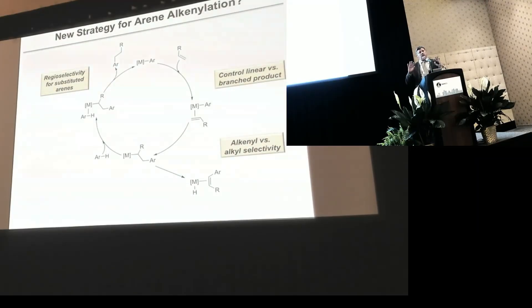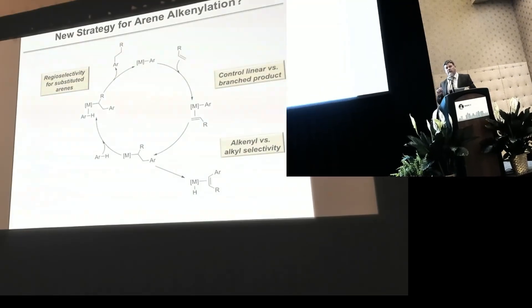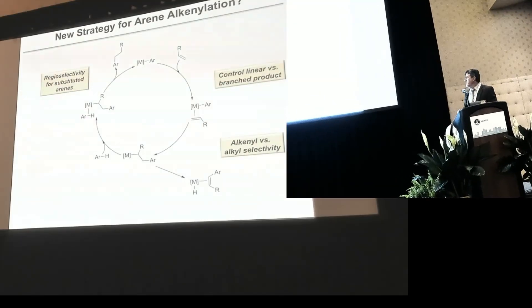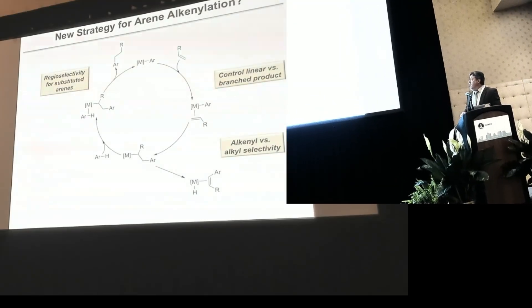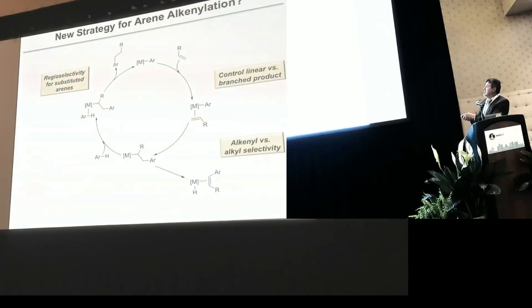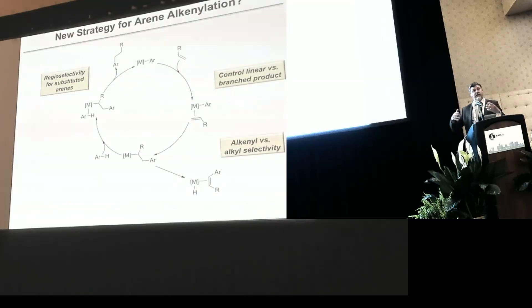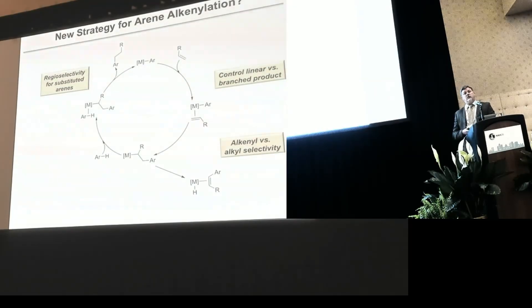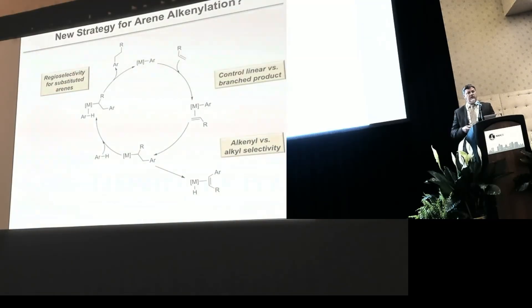So we've got that potential for tunability in our late-metal catalyst. And then finally, in the C–H activation step — whether it occurs directly or from some intermediate after the beta-hydride elimination step — it provides us an opportunity to control the ortho/meta/para selectivity or other types of selectivity in substituted arenes.